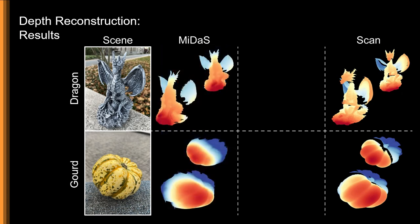we can see clearly in the mesh results how the object structure is lost. The dragon's wing is disconnected from its torso, and the gourd loses all of its surface details.